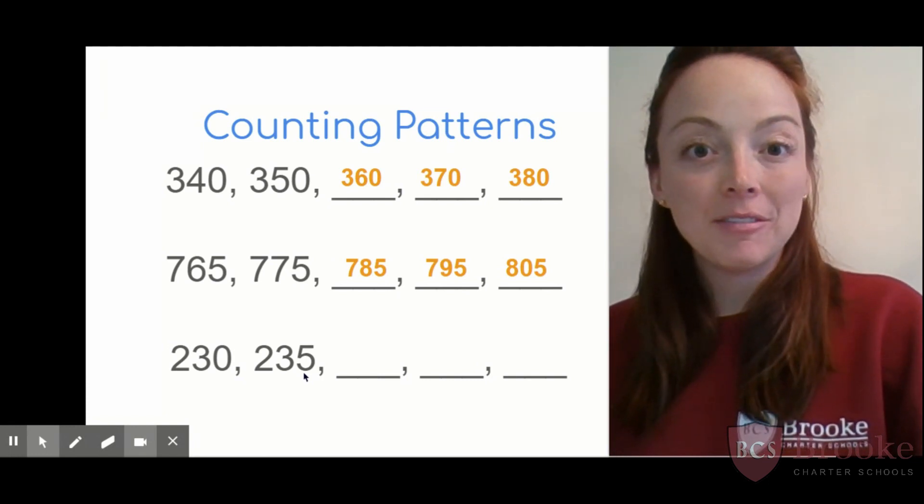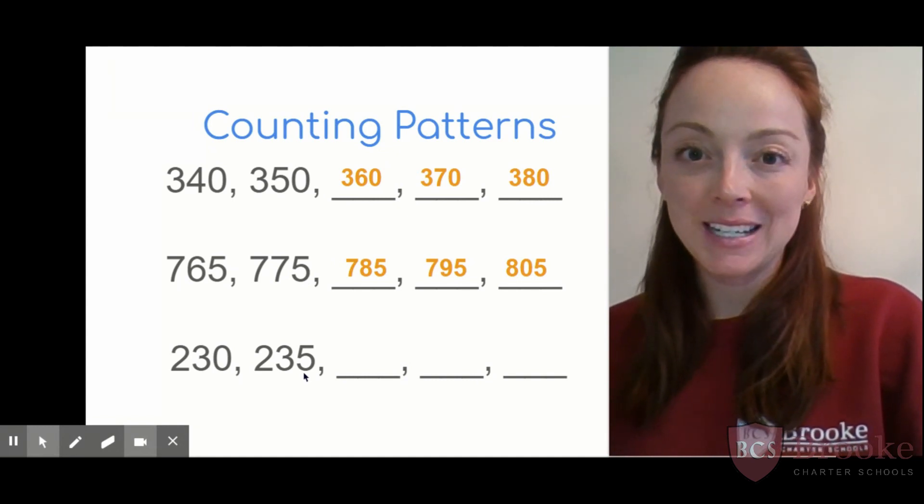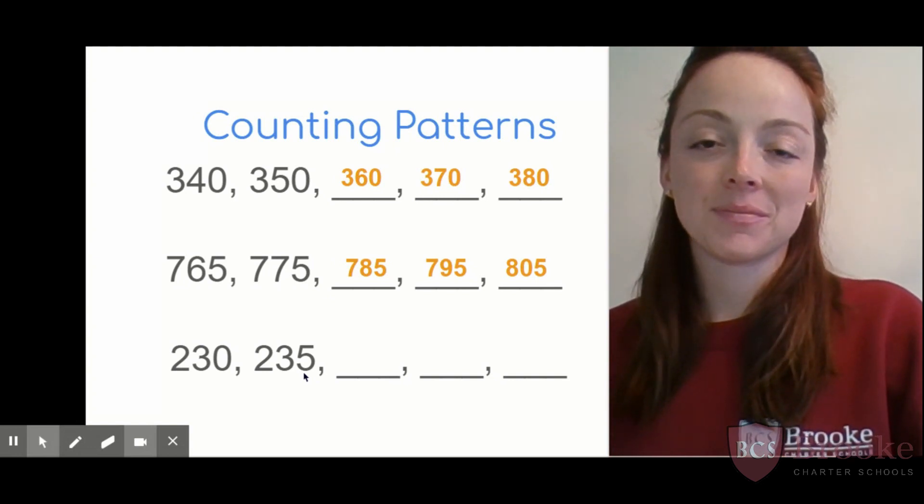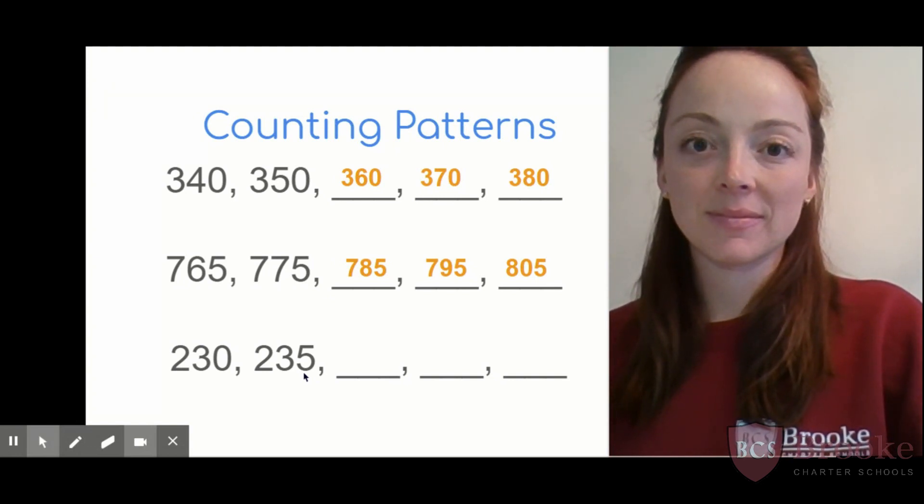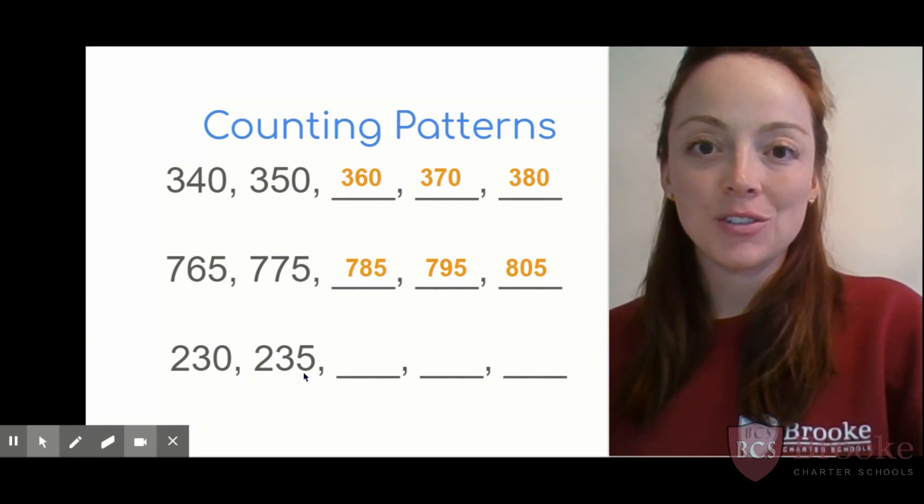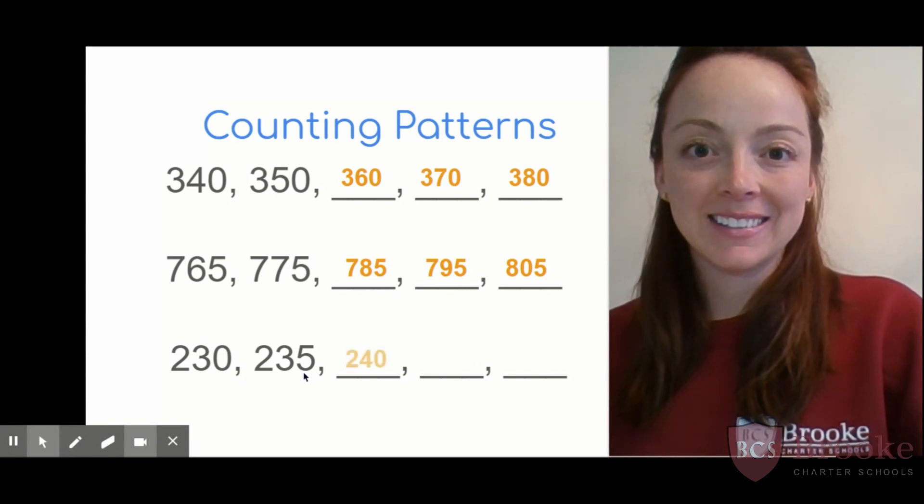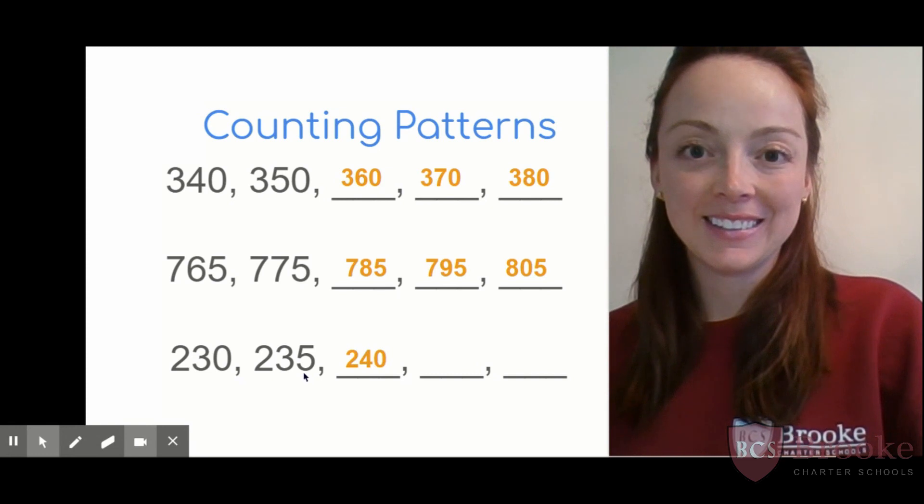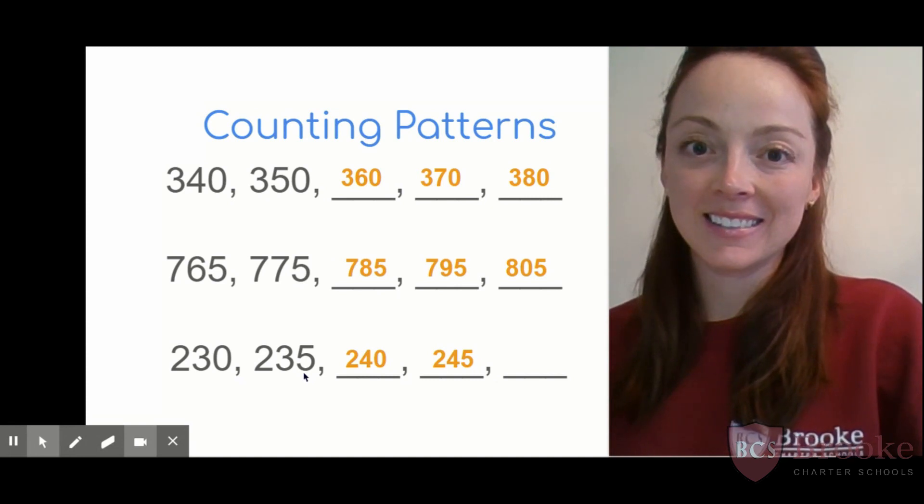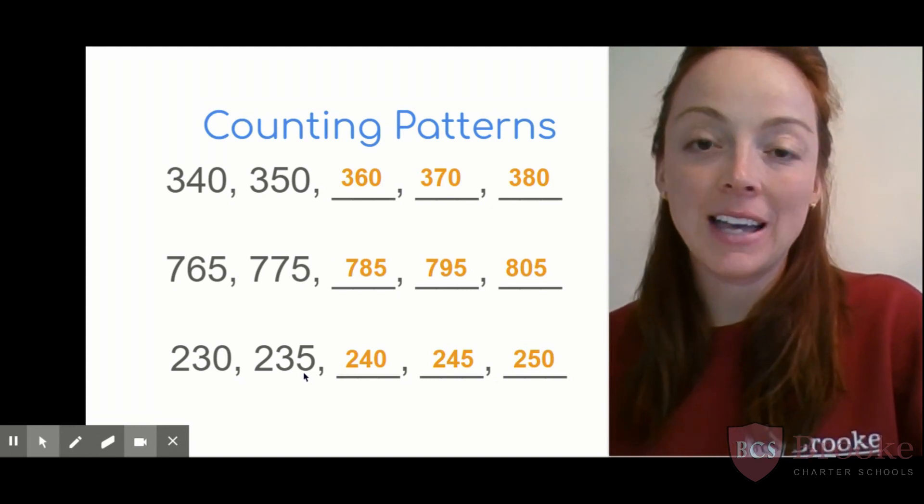It's like at school when we count 5, 10, 15, 20, 25, 30, 35. Fill in what comes next in my pattern. Get to work. All right, let's see if you're right. 230, 235. Next is? 240, good. Then? 245. And last? You got it, 250. Nice job counting that counting by fives pattern.